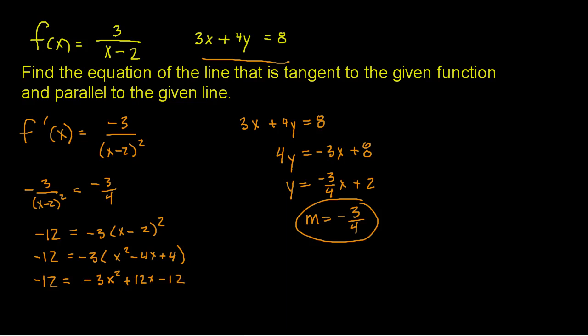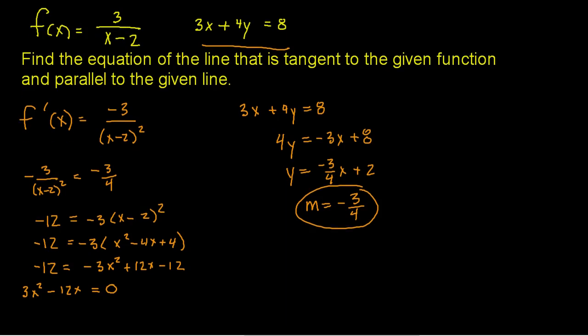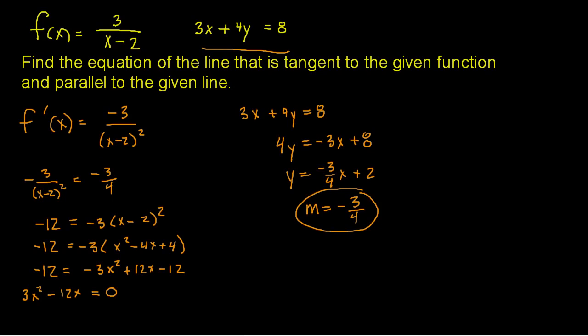I'm going to distribute the negative 3, so I get negative 3x squared plus 12x minus 12. I'll move everything to the left-hand side. It's always easier to solve quadratics when they're positive. That gives me 3x squared minus 12x plus 0, since the negative 12 on both sides cancels out. So I get 3x squared minus 12x equals 0. To factor, I factor out 3x and get 3x times x minus 4 equals 0.